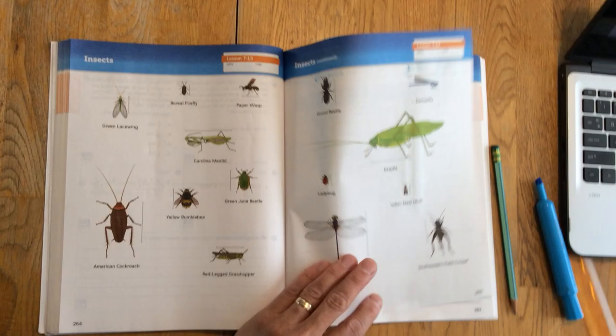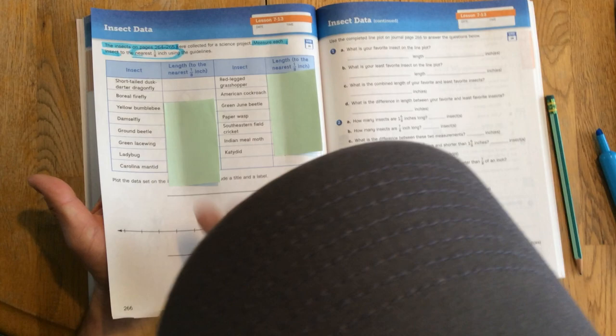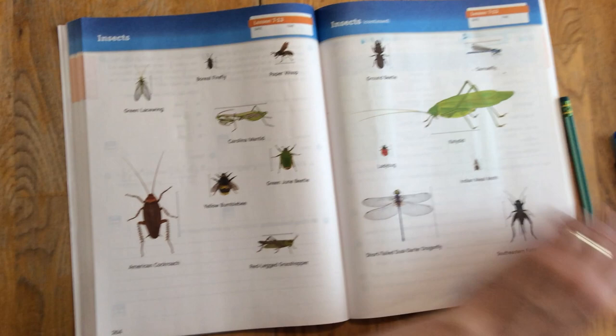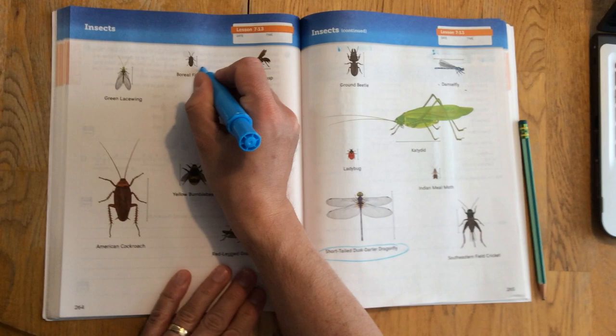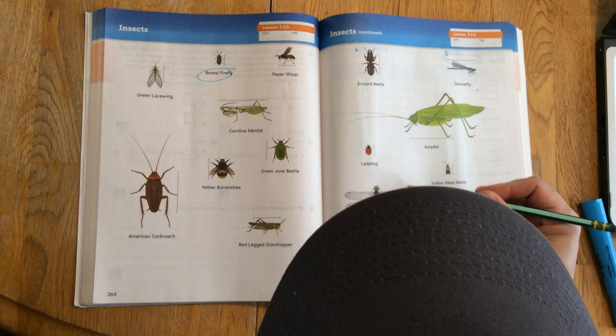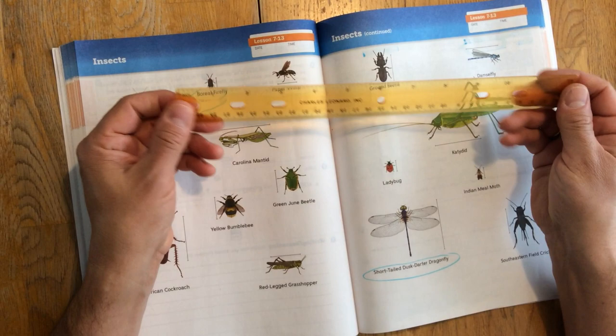So we're going to take a look at the first couple: the short-tailed dusk darter dragonfly and the boreal firefly. Each of these illustrations has some guidelines, as you can see, to help you square up your measurements, and I'm going to use a ruler. Now, rulers usually have two sides: an inches side and a centimeter side.